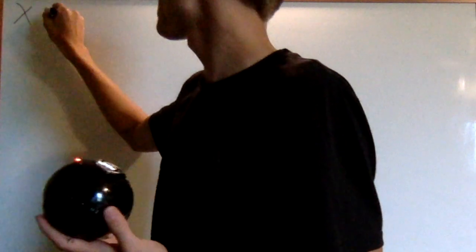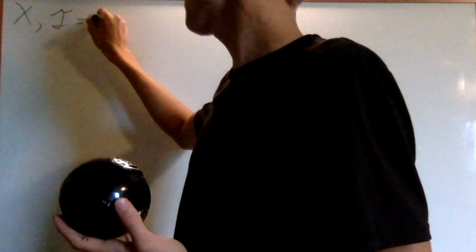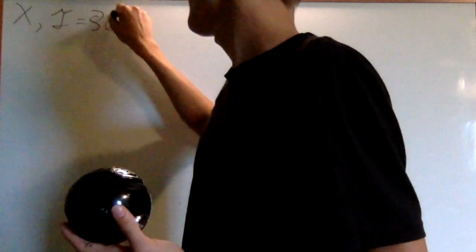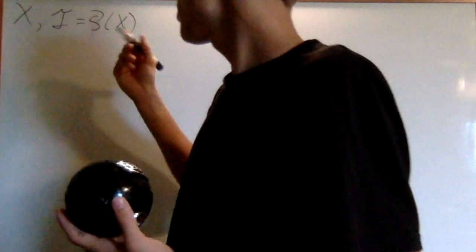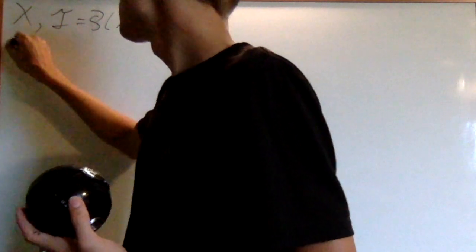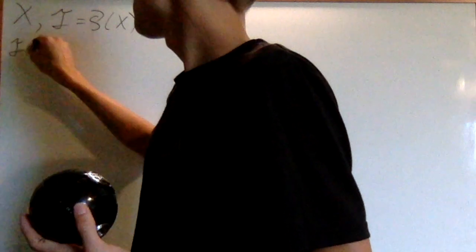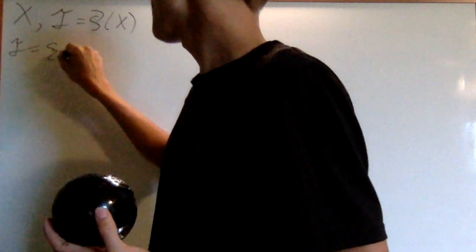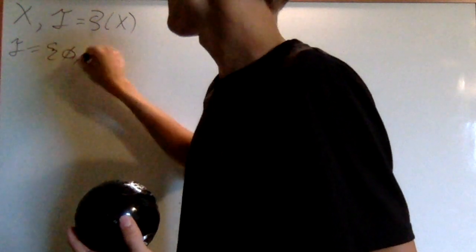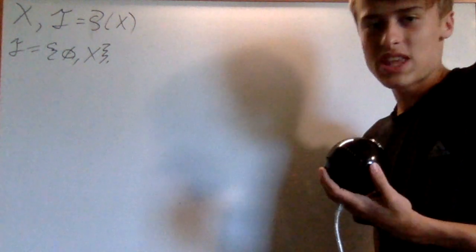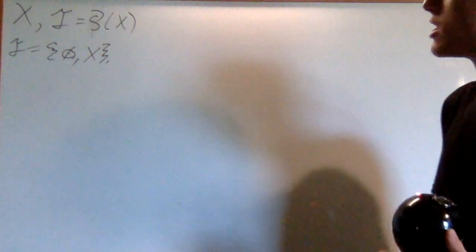the discrete topology on it is just going to be the power set of X. And then the trivial topology is just going to be the set of the empty set and the entire set itself. You can check that both of those follow the axioms and they're both pretty trivial.